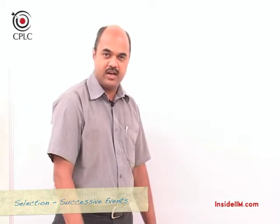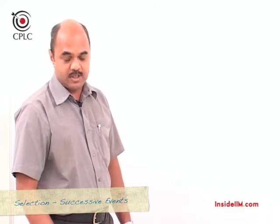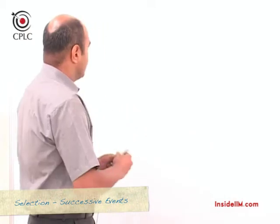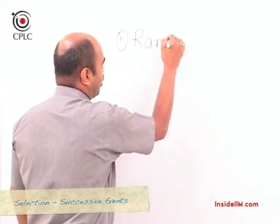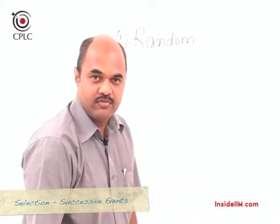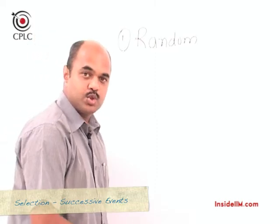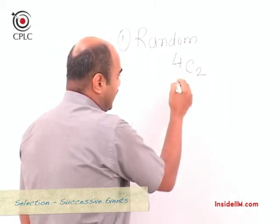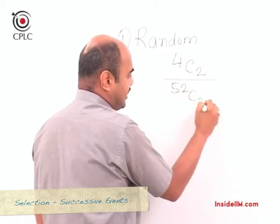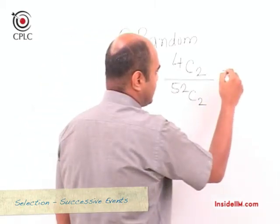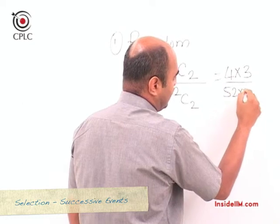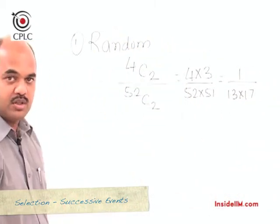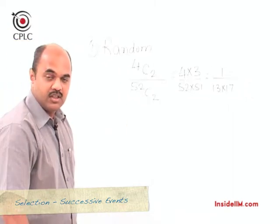Let's now look at selection involving successive events. Consider a pack of 52 cards from which we draw 2 cards and need to find the probability that both are queens. If 2 cards are drawn at random, favorable cases are 4C2 (4 queens, choose 2) divided by total cases 52C2. This gives (4 × 3) / (52 × 51) = 1 / (13 × 17).